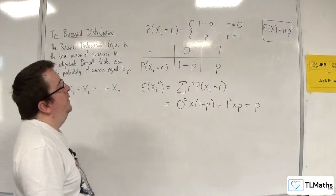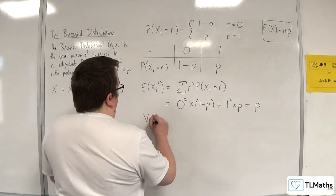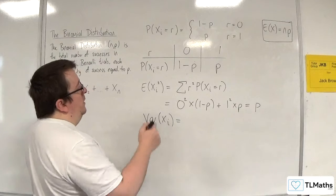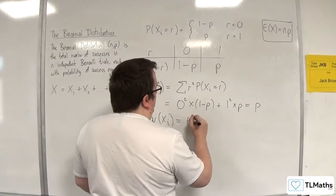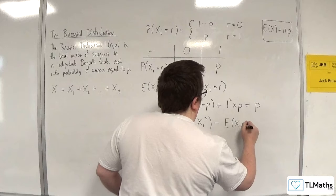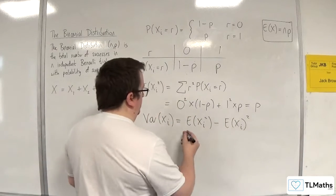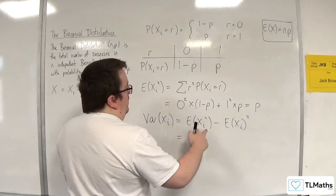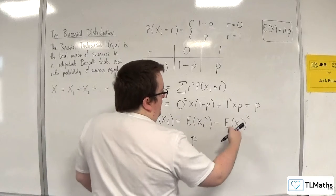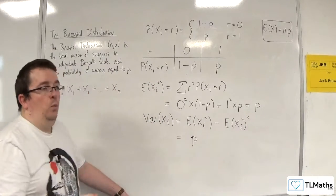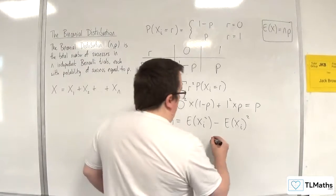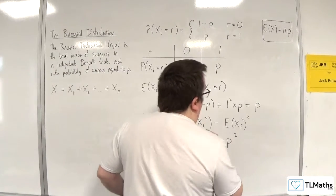That means that Var(Xi) is equal to E(Xi²) minus E(Xi)². This is equal to p, which we just worked out. E(Xi) was equal to p from the previous video, so that's minus p².